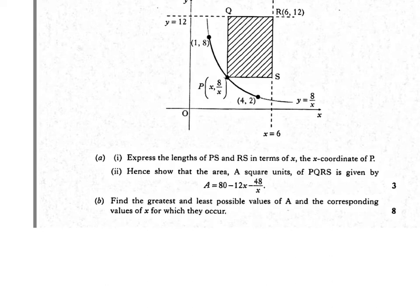Part B, find the greatest and least possible values of A, the area, and the corresponding values of x for which they occur.